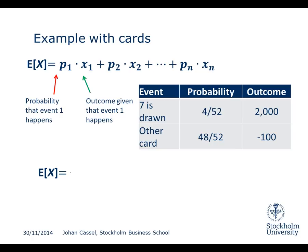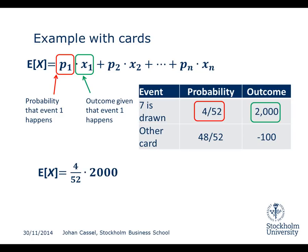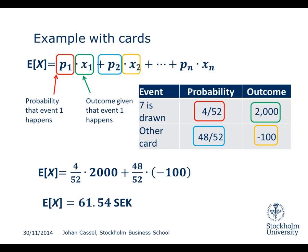The expected value was computed using the formula here. First, you take the probability that event 1 happened — in our case, that the 7 was drawn — then multiply it by the outcome if you draw a 7. Then you add the probability of the second event, that any other card is drawn, which was 48 divided by 52, and multiply it by the outcome of minus 100. We found that this expected value was 61.54 Swedish Kronor.